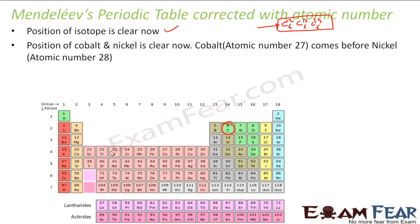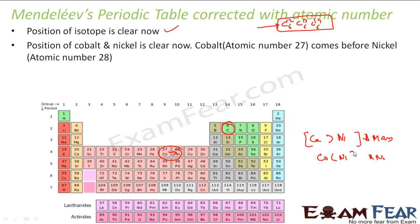The position of cobalt and nickel is now clear. Cobalt and nickel were not properly arranged when using atomic mass, because the atomic mass of cobalt is greater than that of nickel. But when you use atomic number, cobalt is 27 and nickel is 28 — they are properly arranged. Since we now use atomic number, this issue is fully resolved.